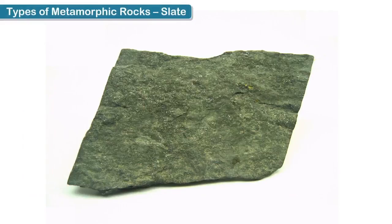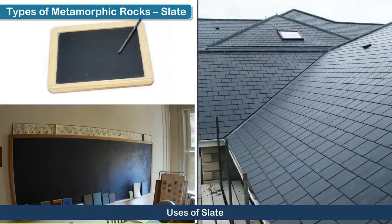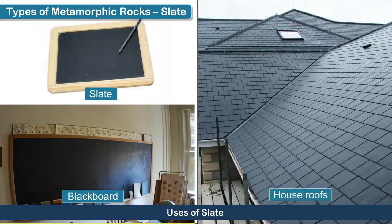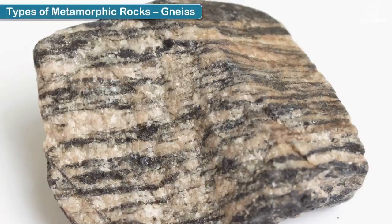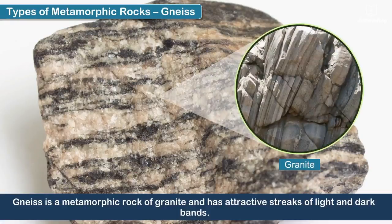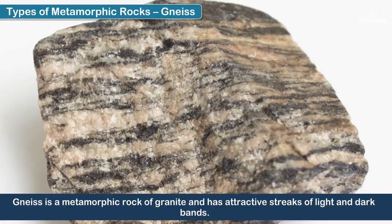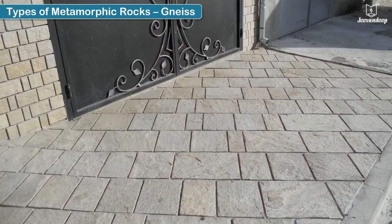Slate is hardened shale, a sedimentary rock. It is used in making slates and blackboards for writing, and for roofs of houses. Gneiss is a metamorphic rock of granite and has attractive streaks of light and dark bands. Gneiss is sometimes used as flooring tiles.